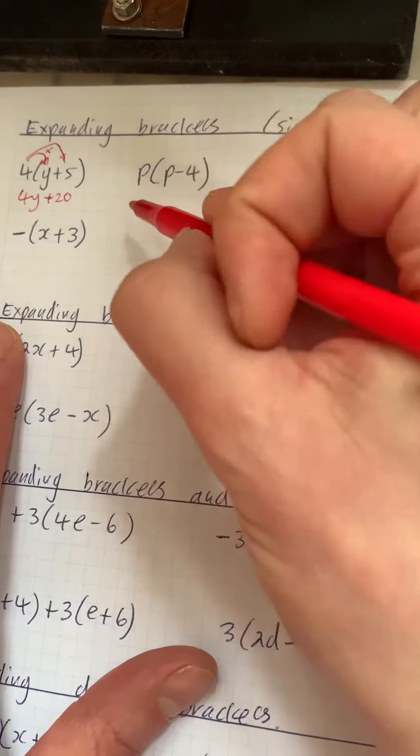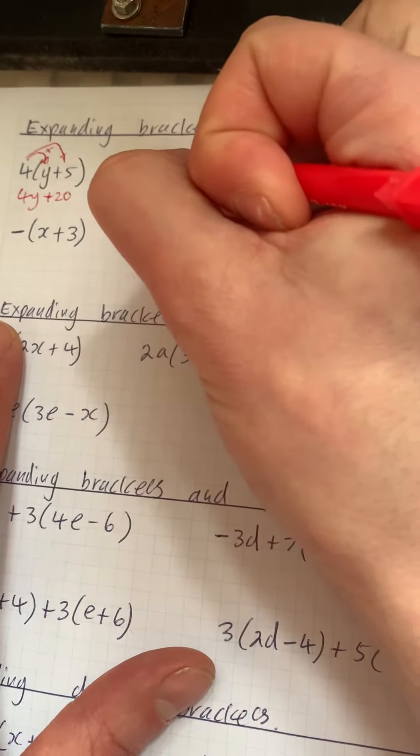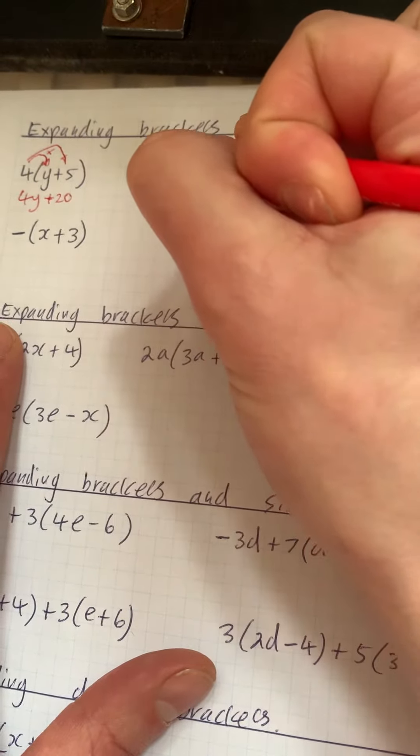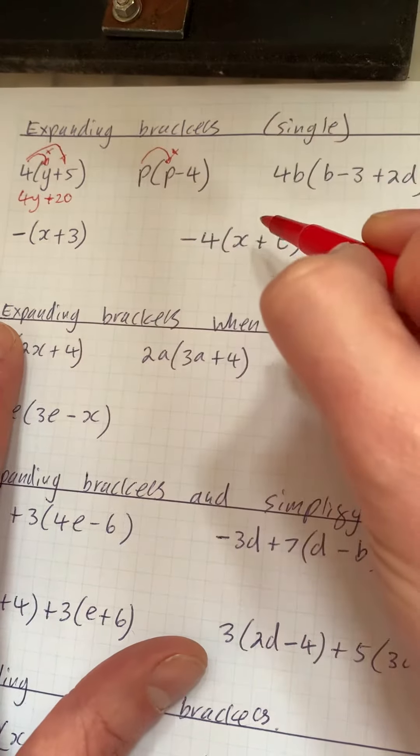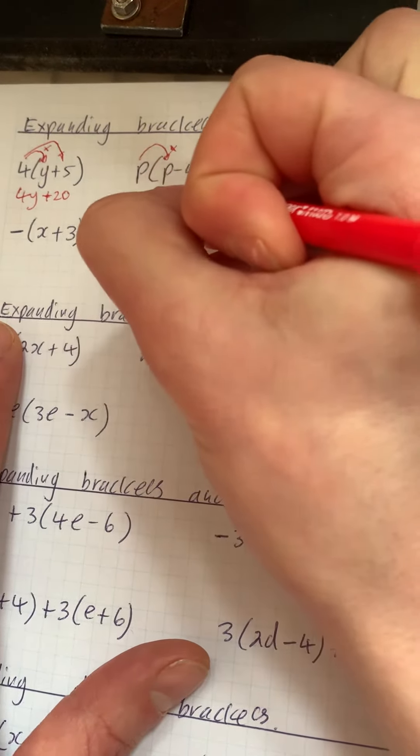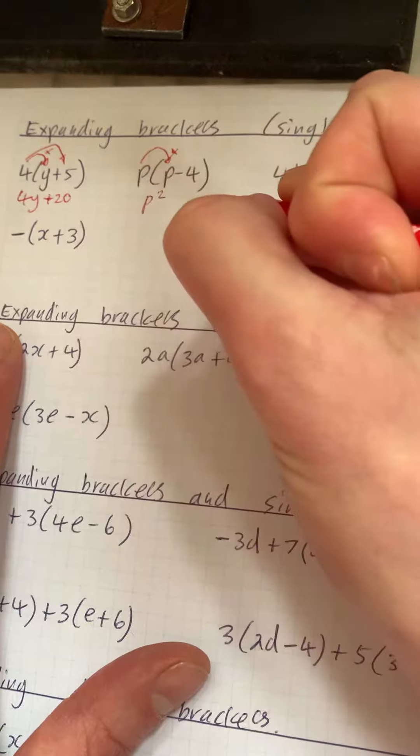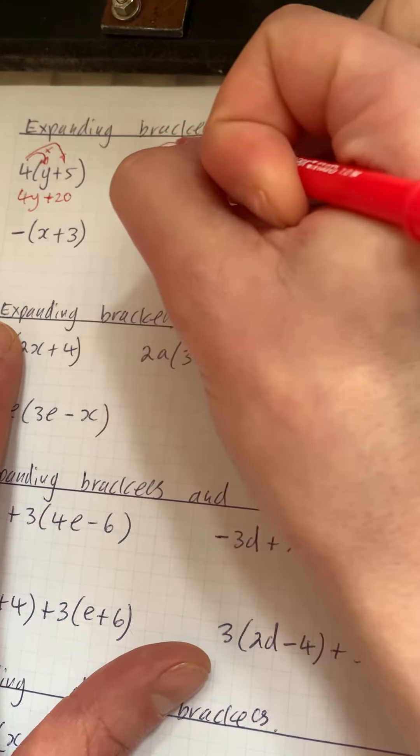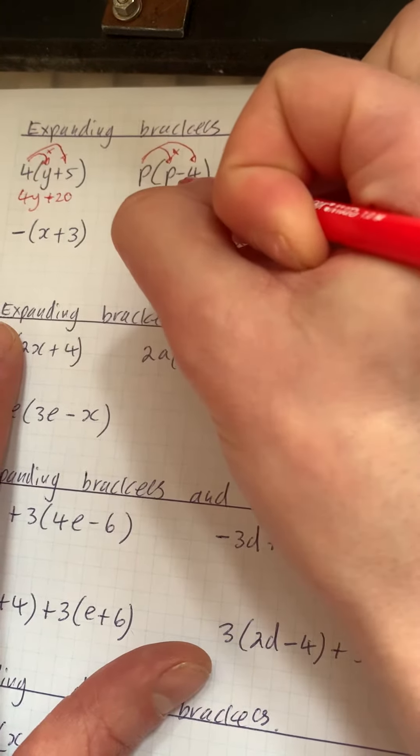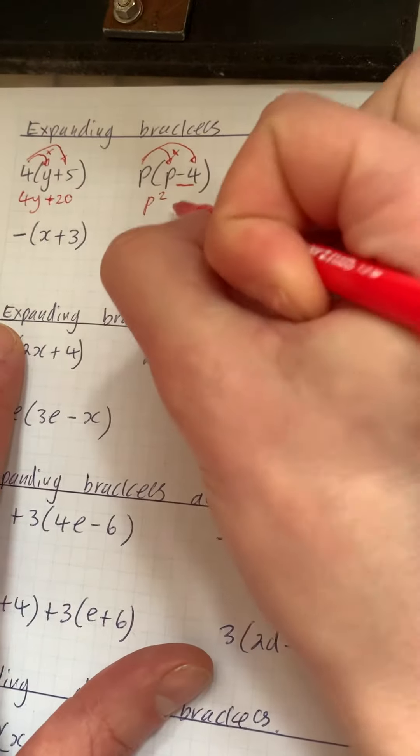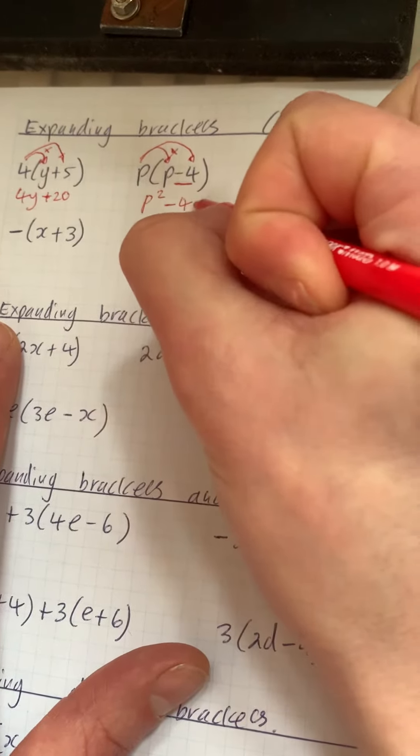The next one is slightly different. Instead of a number on the outside we've got a letter and we do exactly the same. So p times p, a lot of people put 2p here, that's wrong. Remember p times p is p squared. We've then got p times, not 4, but minus 4, which gives us minus 4p.